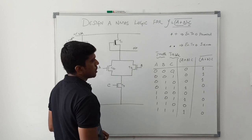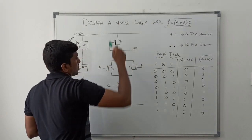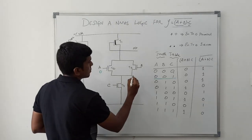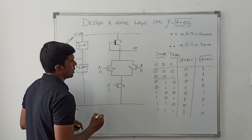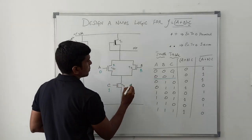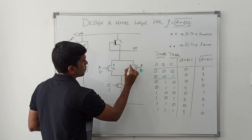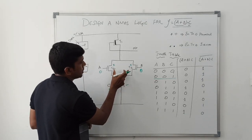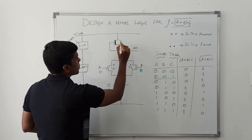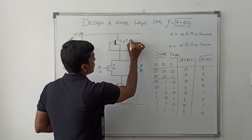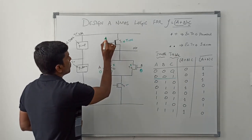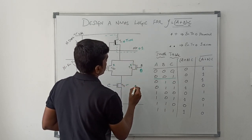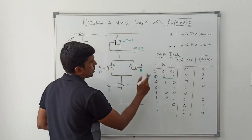Now I am going to verify the result with this truth table. Taking input 0, 0, 1 — A=0, B=0, C=1. In this case, T2 transistor turns off, T3 transistor turns off, and T4 transistor turns on. Since T2 and T3 both go to high impedance state, the pull-down path is broken. T1 transistor always turns on as it is the load resistor, so VDD connects to the output. The output value is 1.